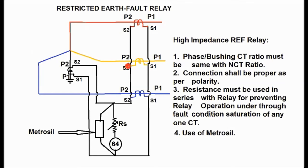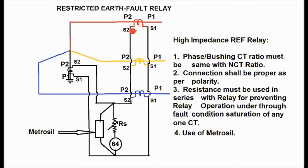Why is restricted earth fault protection used? Restricted means for a particularly defined zone. The neutral CT and the bushing CT form this restricted zone, and if an earth fault occurs within this zone, then only this relay will detect and send a trip signal to the circuit breaker.